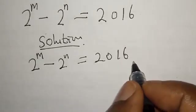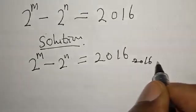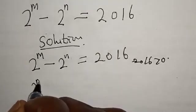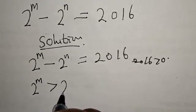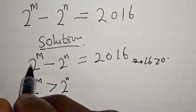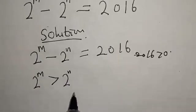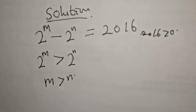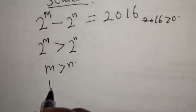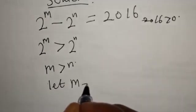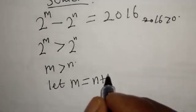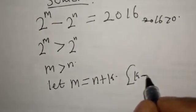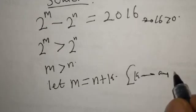This implies that 2016 is greater than 0, then we have 2 raised to power m is greater than 2 raised to power n, and this implies that m is greater than n. So let m be equal to n plus k, where k is any integer.